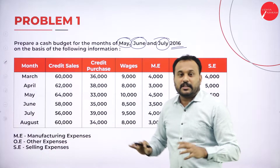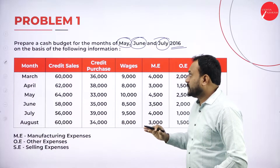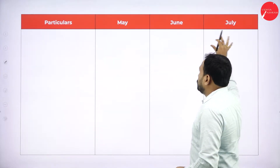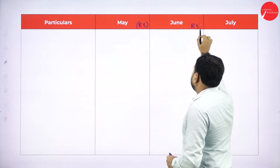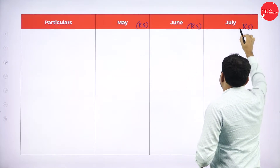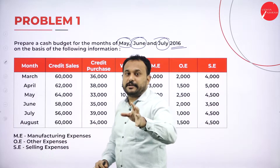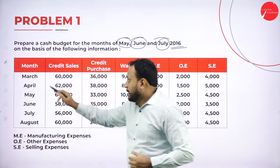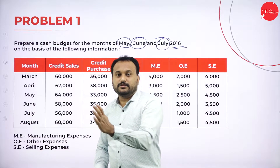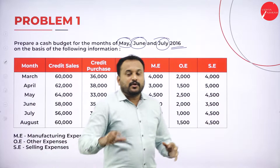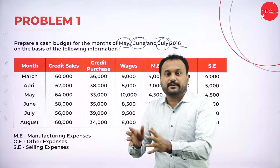I need to prepare for May, June, July, so I write those months with rupees columns. Though they asked us to prepare from May, June, July, they have given entries for March, April, May, June, July, and August. We should not get confused — we only prepare for May, June, July. We need to understand the pattern: what is asked and what we are supposed to do.